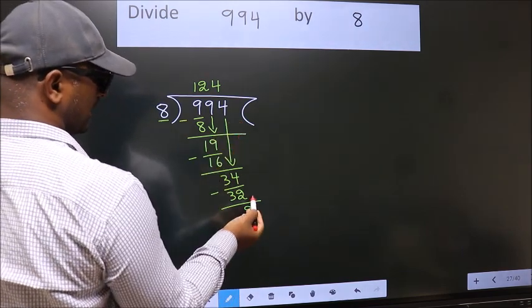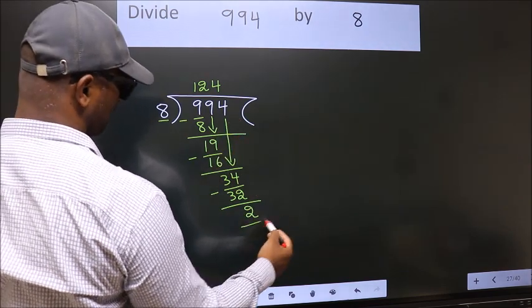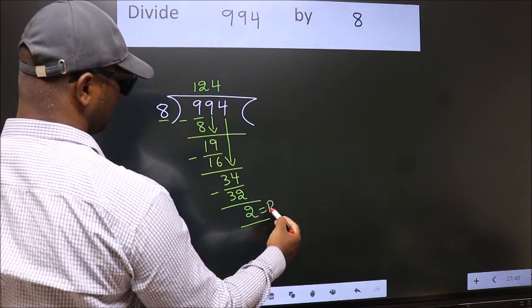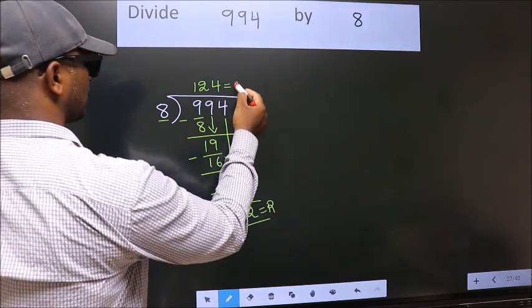No more numbers to bring down. So we stop here. This is our remainder. This is our quotient.